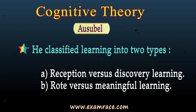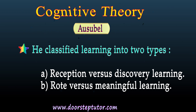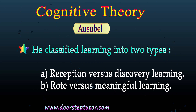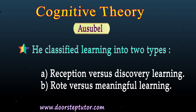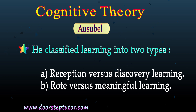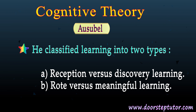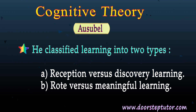According to Ausubel, reception learning follows the deductive method, whereas discovery learning takes place through the inductive method. For example, lectures and presentations are generally receptive in nature, whereas laboratory work is discovery in nature. On the other hand, meaningful learning takes place when the task is associated with what the learner already knows, and rote learning occurs when the task is not associated with prior knowledge.